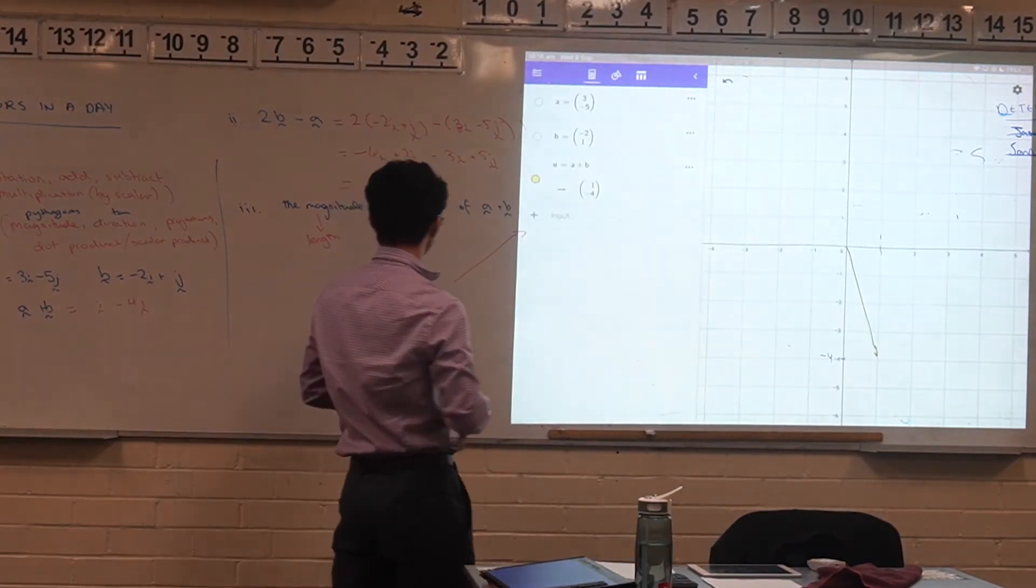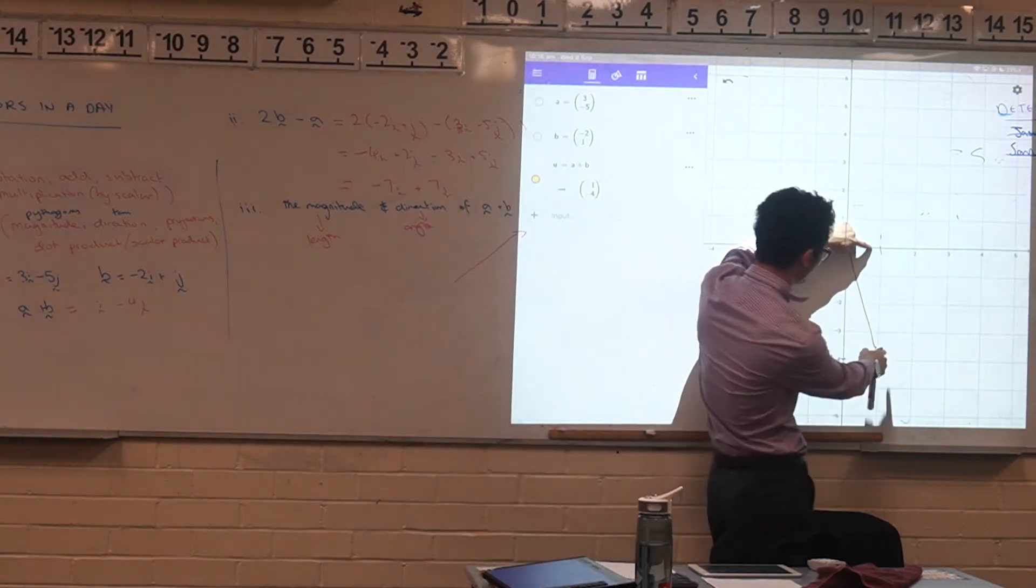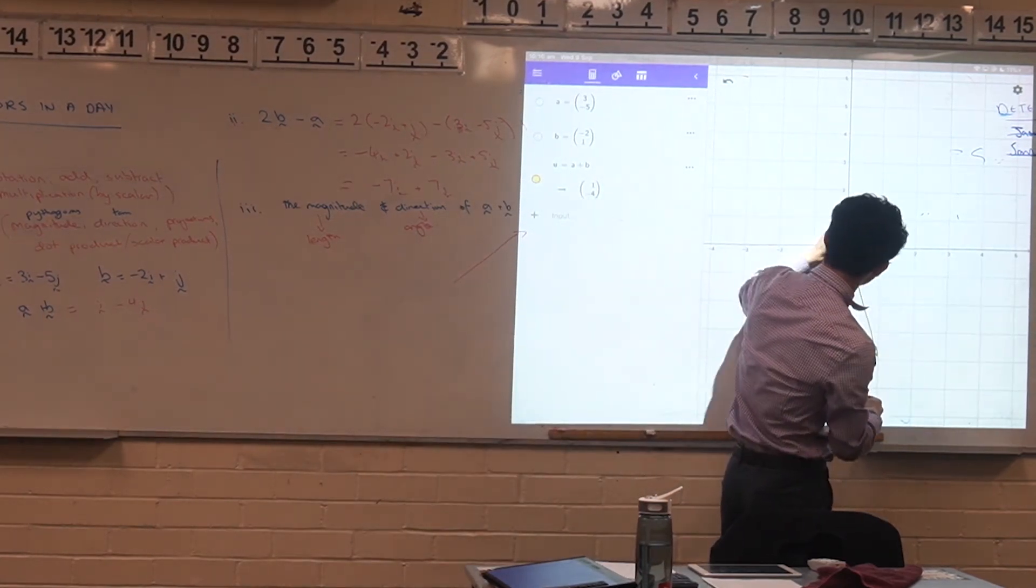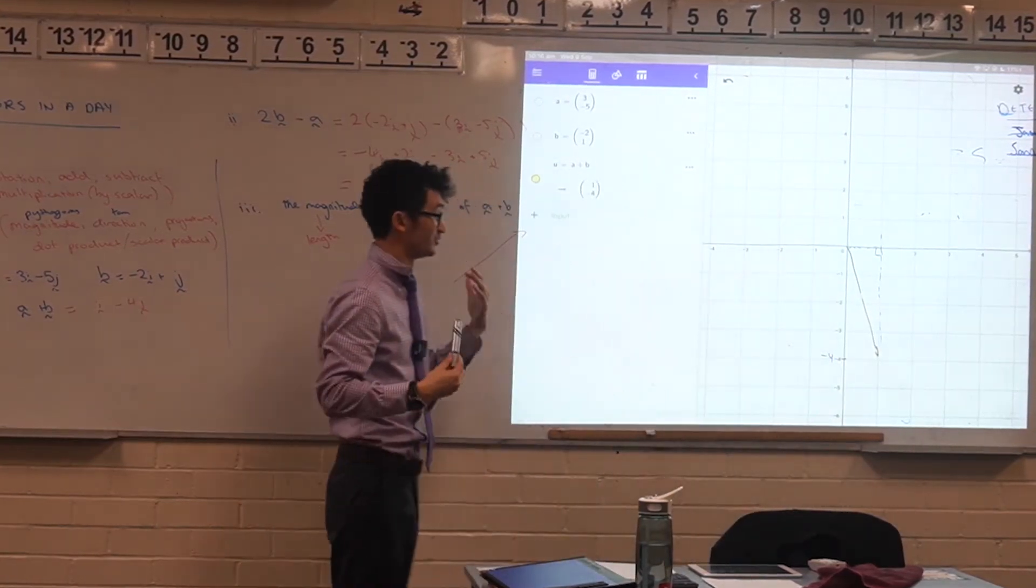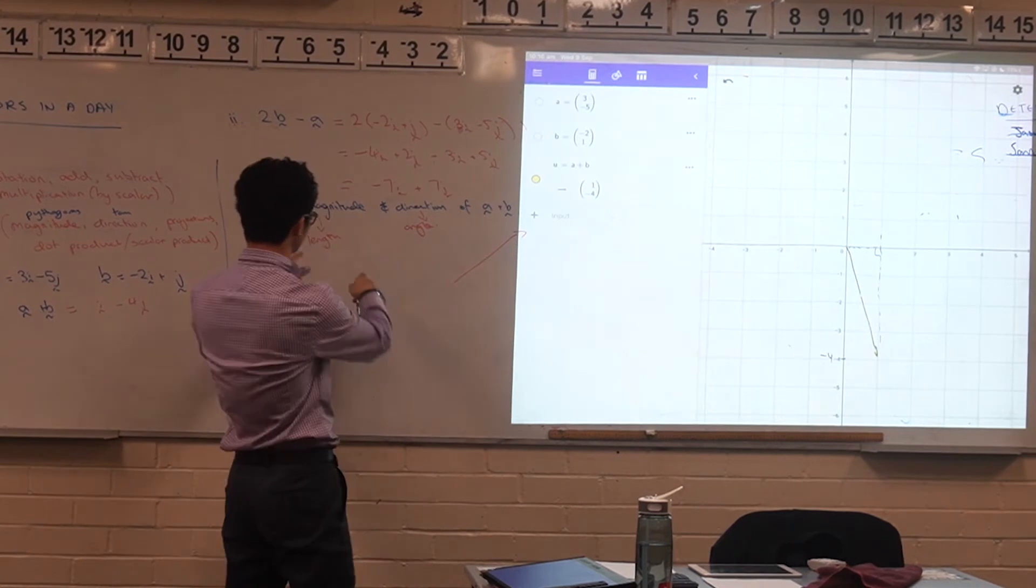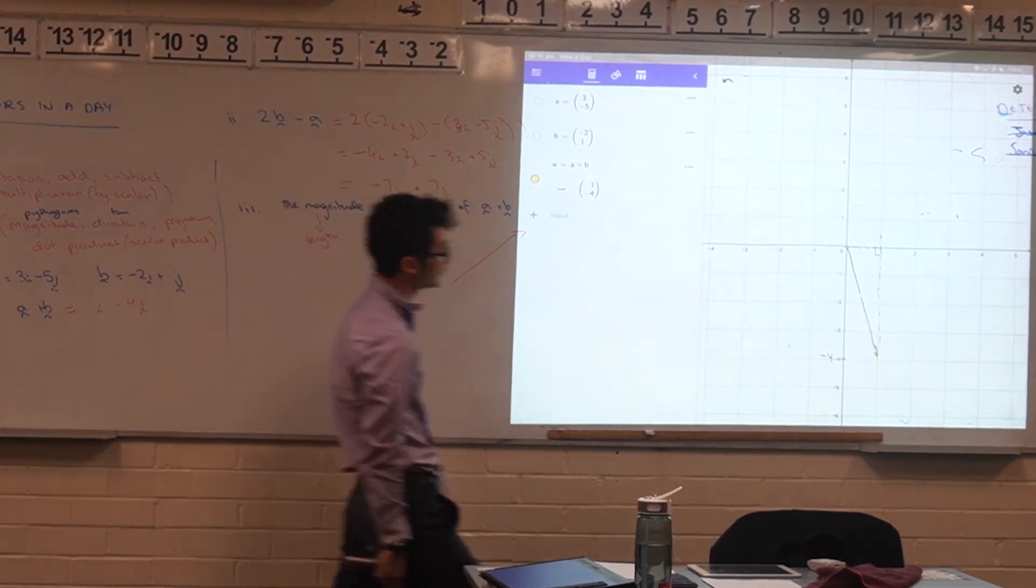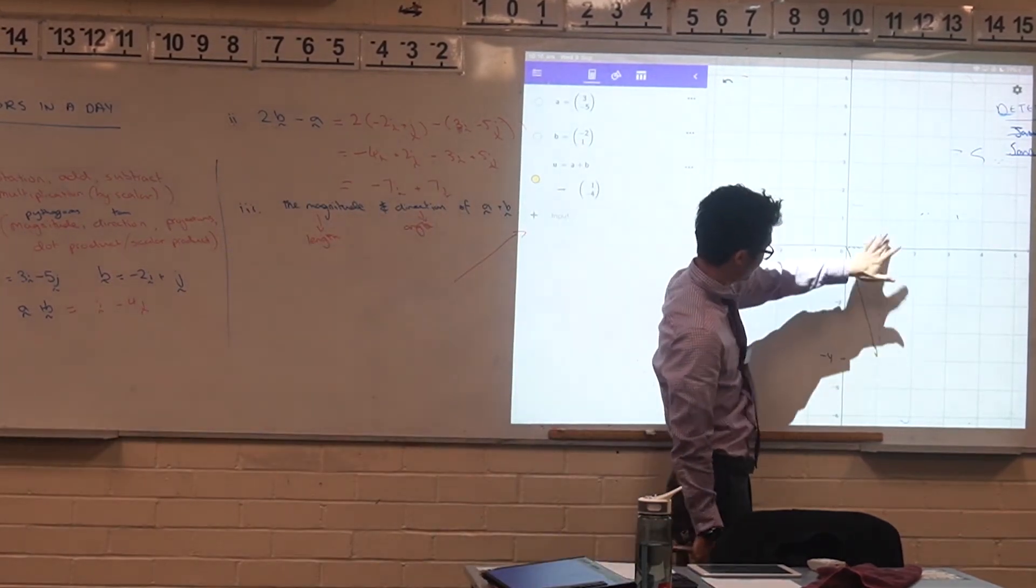And so for the magnitude, why is Pythagorean Theorem useful? Well if you have a look at it, what you've actually created is just a right-angled triangle. So you can see why now the magnitude should be calculated using Pythagorean Theorem, using its horizontal and vertical components, because you've got this length here of 1, this length here of 4.